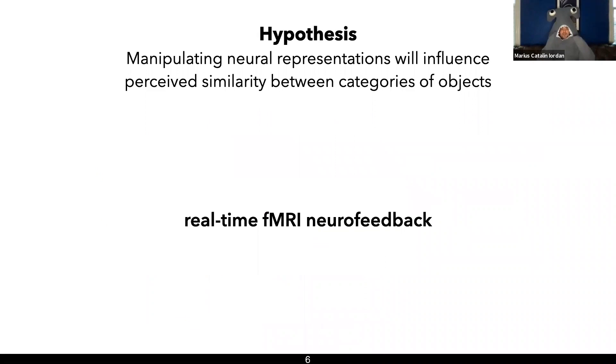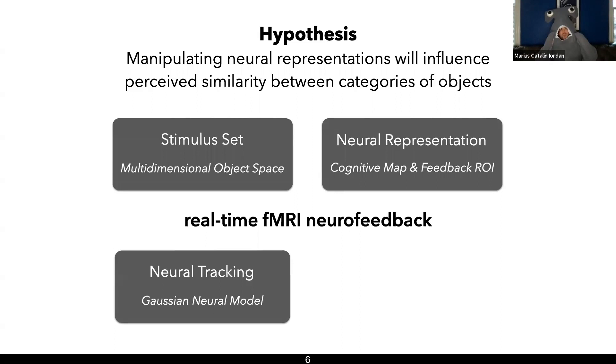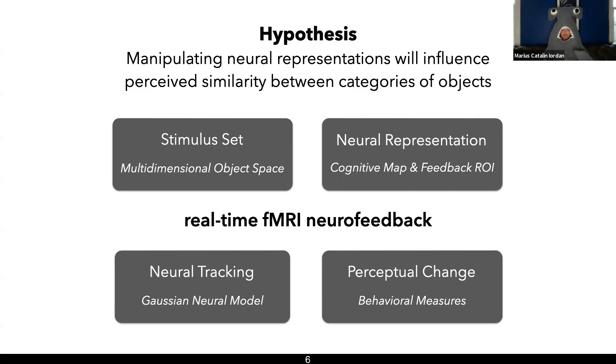So there are four hurdles that we need to overcome for these techniques to allow us causal access to subjective experience. We need to build a complex stimulus set where we can select arbitrary categories. We need to figure out what representation to change in the brain. We need to reliably measure and track the multi-dimensional neural representations we care about so we can change them. And we need to show the changes that we induce translate into neural and behavioral effects at the other end.